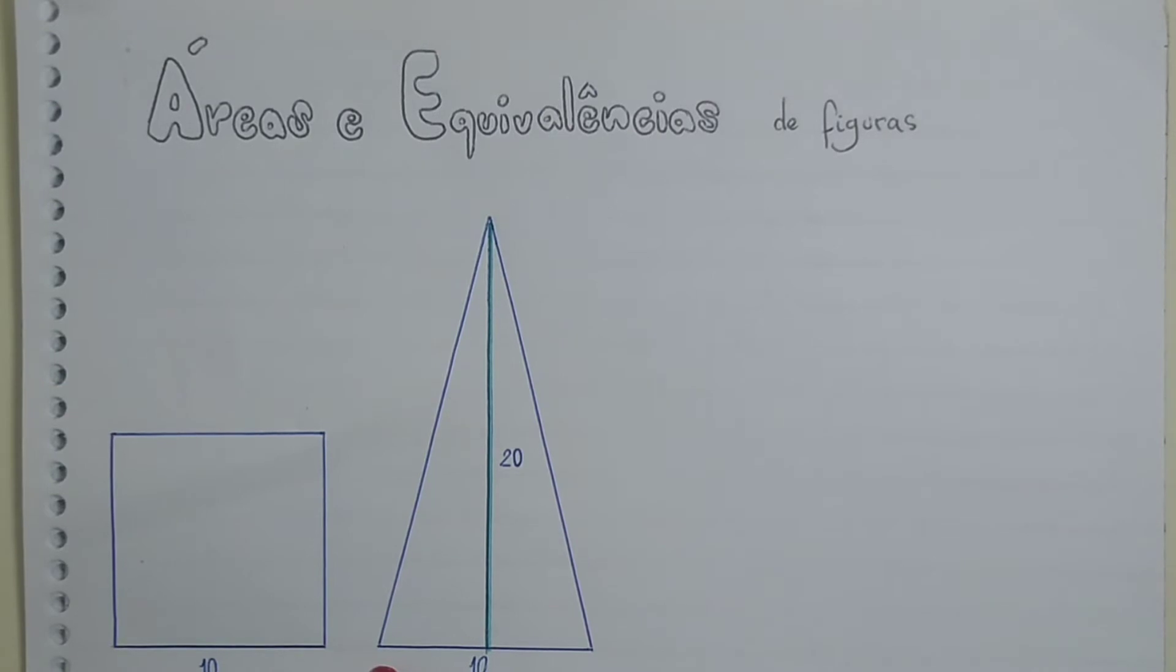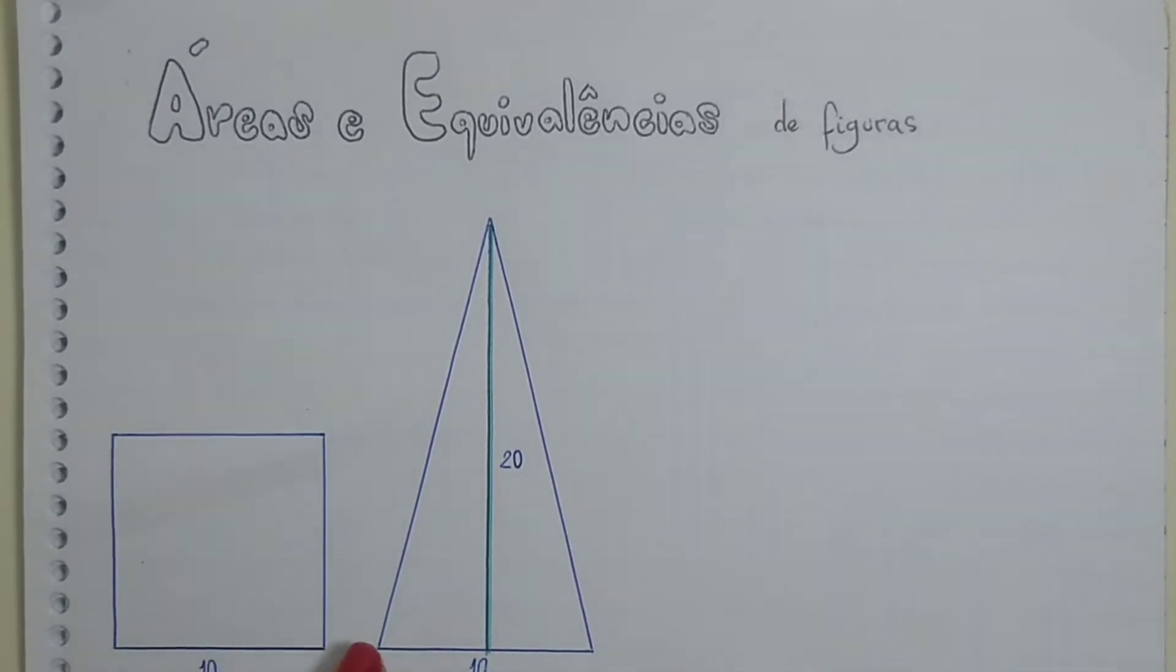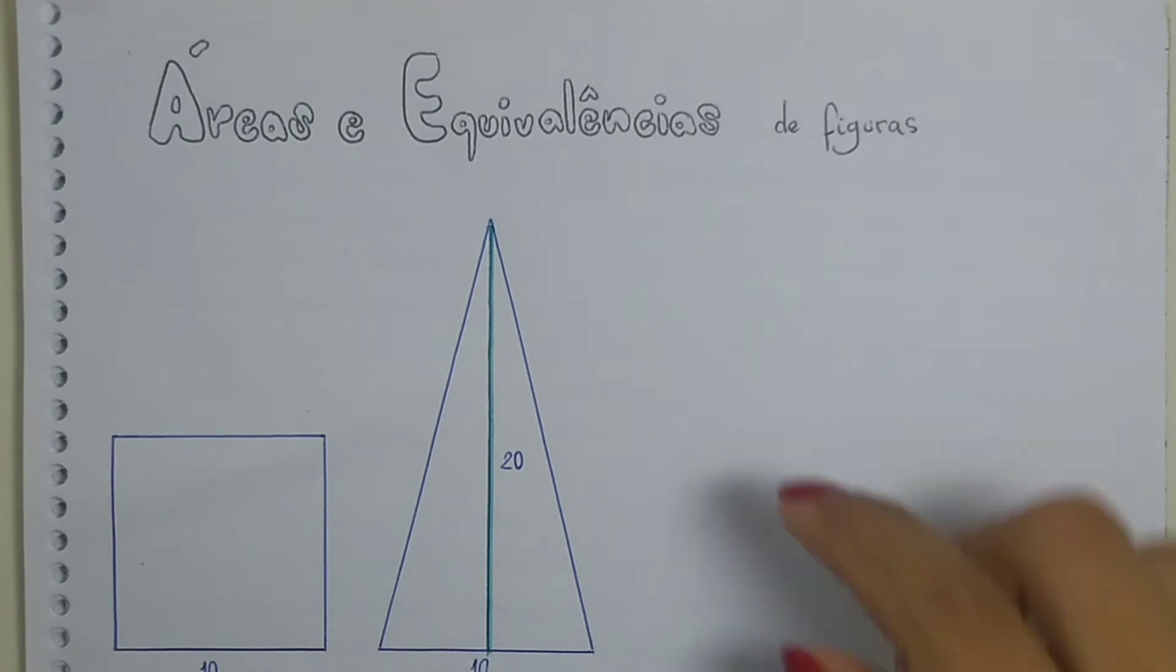But, we can say that they are equivalent figures. How? For example, if I put a figure like this, it's supposed to be the other, we'll see that there is an equivalence, an equivalence that is involving the form of these two figures.